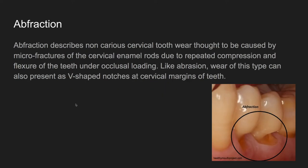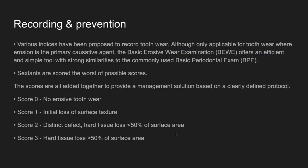Abfraction is really hard to diagnose, but it is described as non-carious cervical tooth wear thought to be caused by micro-fractures of the cervical enamel rods due to repeated compression and flexure of the teeth under occlusal loading. Like abrasion, wear of this type can also present as V-shaped notches at the cervical margin of the teeth. Teeth are within a socket of bone and they tend to flex as the patient bites down, and sometimes this flexure can rub the cervical margin of the tooth against the socket causing wear over time. It is usually classified alongside abrasion caused by brushing or other extrinsic objects.